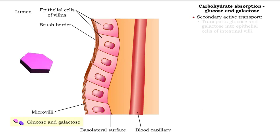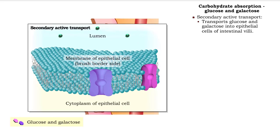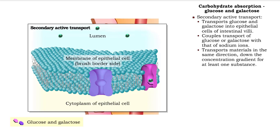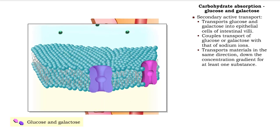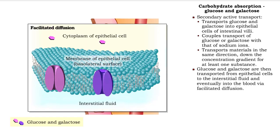Glucose and galactose are absorbed into epithelial cells by secondary active transport. The transport of either substance is coupled with active transport of sodium ions — two sodium ions for each glucose or galactose molecule. The ions and molecules move in the same direction, down the concentration gradient for at least one of the transported substances. From the epithelial cells, the glucose and galactose are transported into the interstitial fluid, and eventually into the blood, via facilitated diffusion.